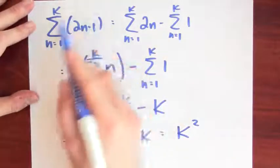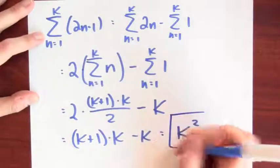So the sum of the first k odd numbers is k squared. But I can also see this fact that the sum of odd numbers gives me perfect squares. I can see this fact geometrically. So I'll draw, say, 1 dot.